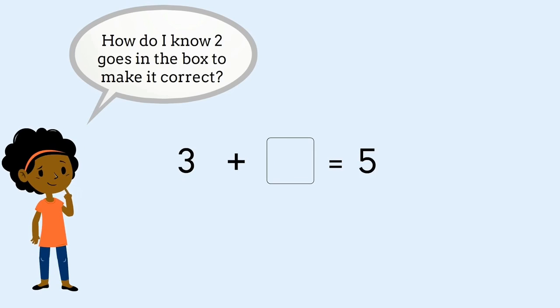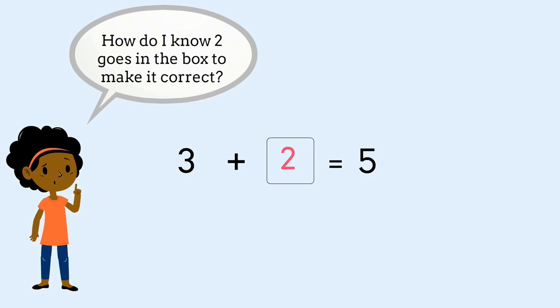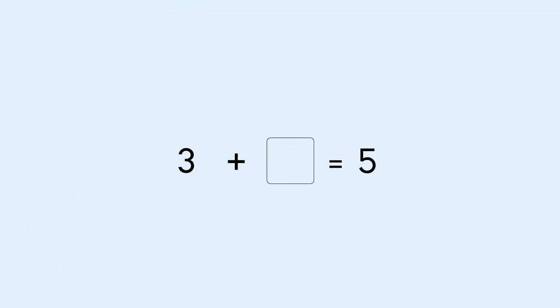How do I know what number goes in the box to make it correct? I could count up with my fingers from 3 to 5 to see how many more I need to add to 3 to make 5. 3 in my head, 4, 5. I've counted 2 fingers so I know 2 goes in the box.